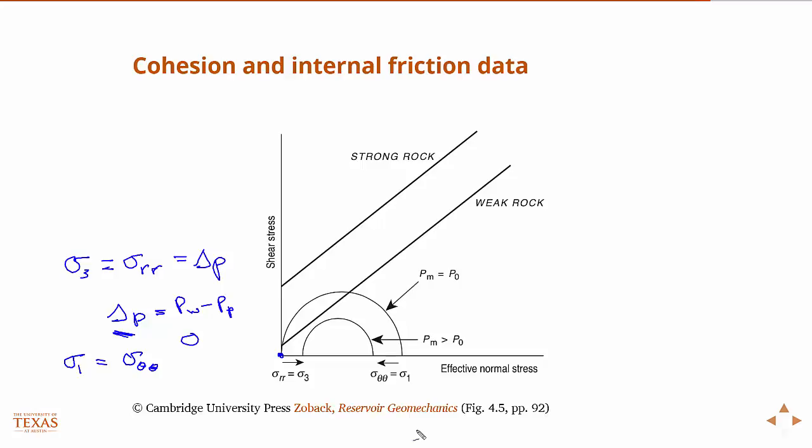If we increase the delta p, in other words, if we increase the mud weight, moving the delta p away from zero, then we shrink that Mohr circle and we move it off the failure line. This scenario of a balanced mud weight here would fail, would be an unstable wellbore because the Mohr circle crosses the failure line. But if we increase the mud weight, we shrink that Mohr circle, moving it off that line and increasing wellbore stability.